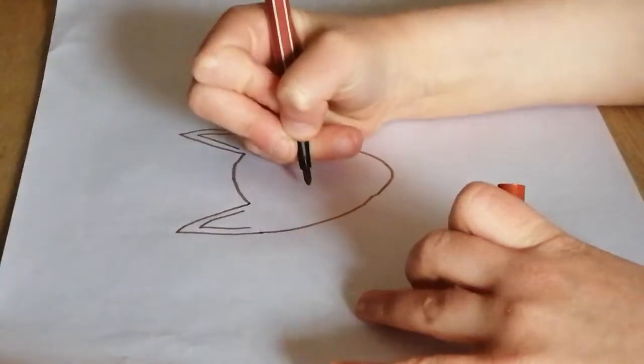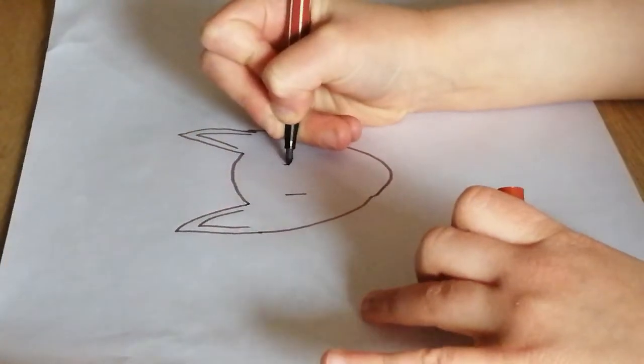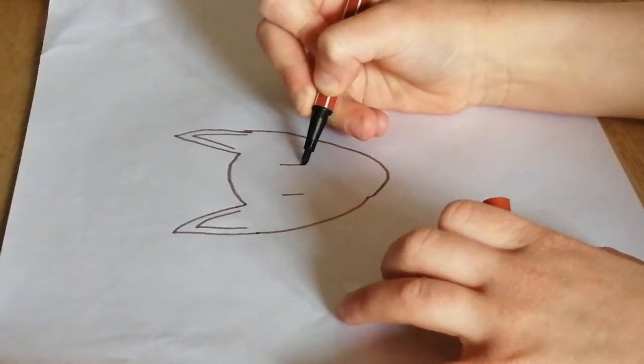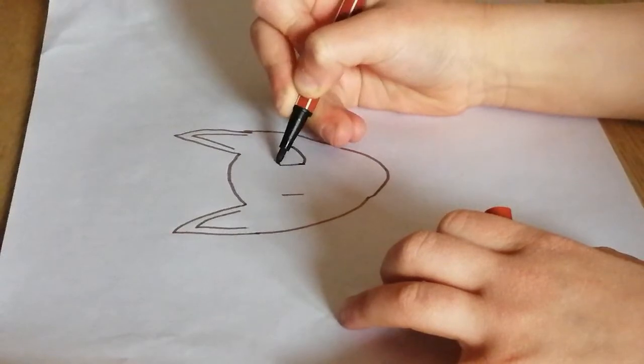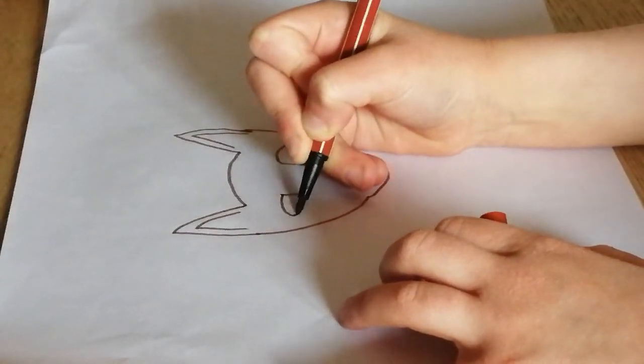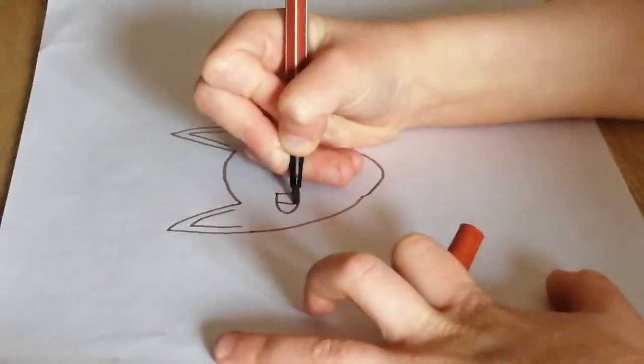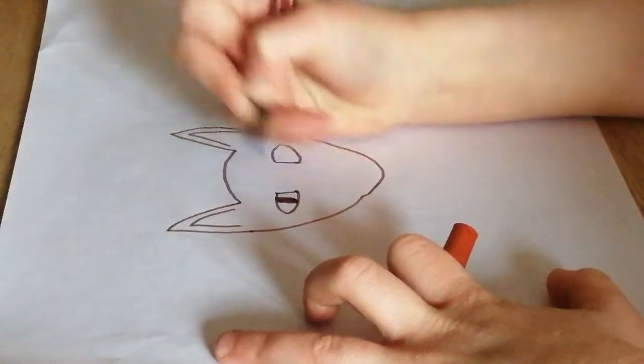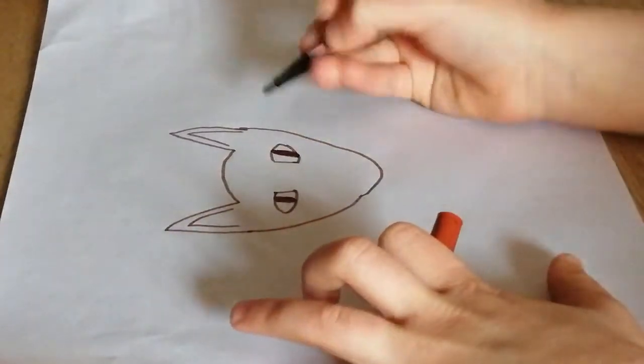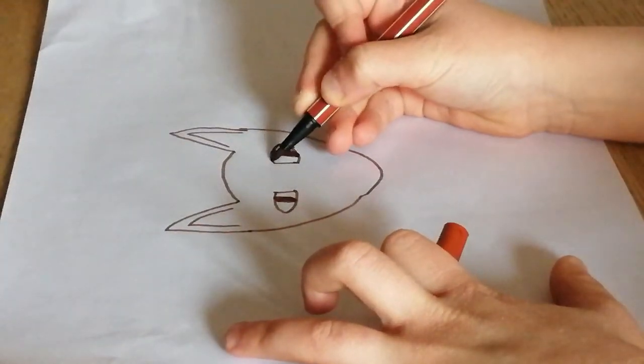So now I'm just going to draw two lines like that. You probably won't know what this is, but these are the kind of shape of eyes I'm doing. I've kind of made one bigger than the other, but that's okay because at the end you can do something about it.